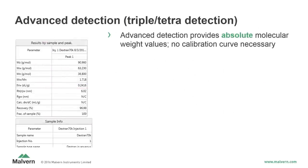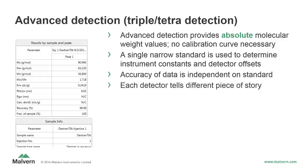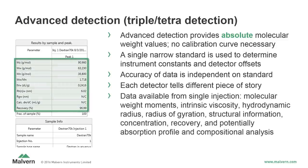Advanced detection provides absolute molecular weight values, meaning no calibration curve is necessary — the molecular weight is calculated independently from the light scattering detector. A single narrow standard is used to determine instrument constants and detector offsets, and the accuracy of the data is independent of the identity of the standard. Each detector tells a different piece of the story: sample concentration from the RI and UV-Vis or photodiode array detectors; sample viscosity and size information from the viscometer detector; and molecular weight from the light scattering detector. With advanced detection, there is an incredible amount of data available from a single injection, including molecular weight moments, intrinsic viscosity, hydrodynamic radius, radius of gyration, structural information, concentration, recovery, and potentially absorption profile and compositional analysis.